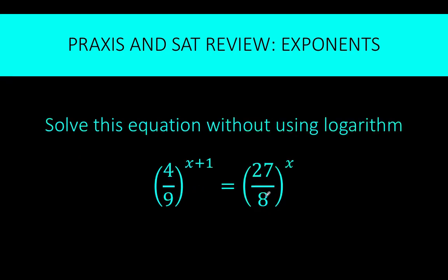What we are given here is an equation with variable in the exponents. And normally when there is an unknown quantity in the exponents, the way to solve the problem is to use logarithm. But this problem is designed in such a way that we can solve this without using logarithm, but we need to recall our laws of exponents. At the left side, you have a fraction 4 over 9. And at the right side, you have a fraction 27 over 8.